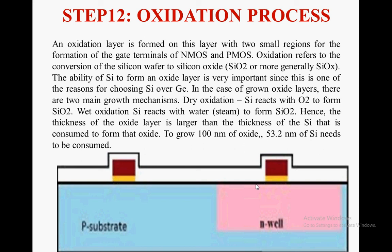There are two main oxide growth mechanisms: dry oxidation, where silicon reacts with oxygen to form silicon dioxide (Si + O₂ → SiO₂), and wet oxidation, where silicon reacts with water or steam to form silicon dioxide. The thickness of the oxide layer is larger than the thickness of the silicon consumed. To grow 100 nm of oxide, 53.2 nm of silicon needs to be consumed.